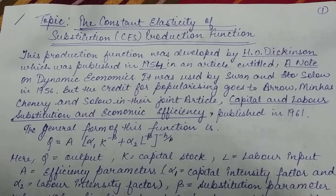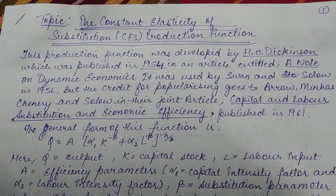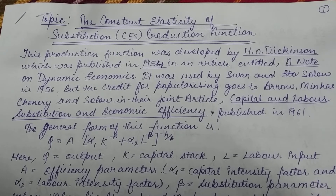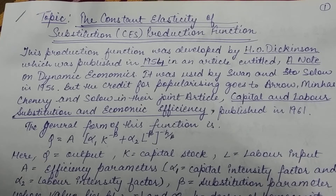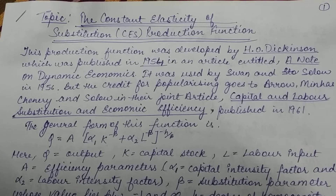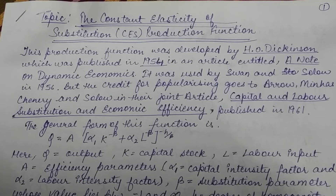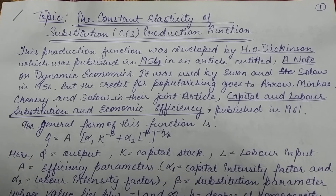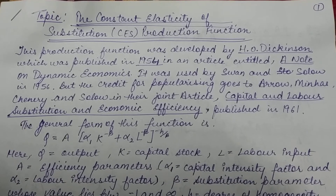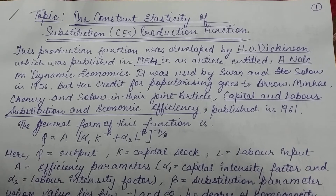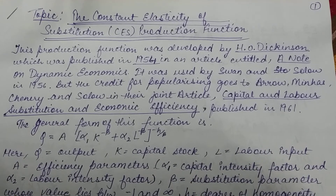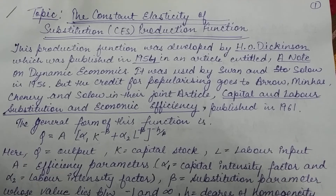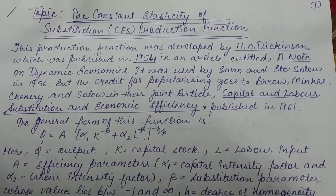This production function was developed by H.O. Dickinson, which was published in 1954 in an article 'A Note on Dynamic Economics'. It was used by Swann and Solow in 1956, but the credit for popularizing goes to Aero, Minhas, Chandri, and Solow in their joint article 'Capital and Labour Substitution and Economic Efficiency', published in 1961.